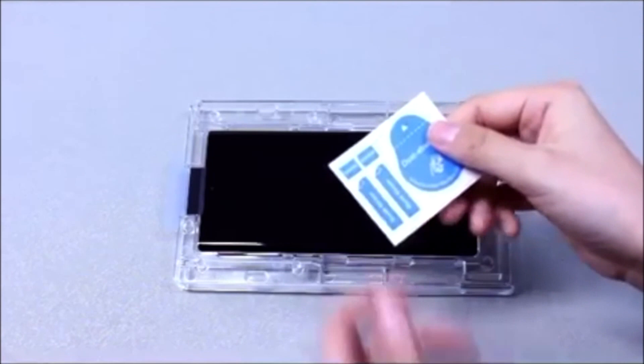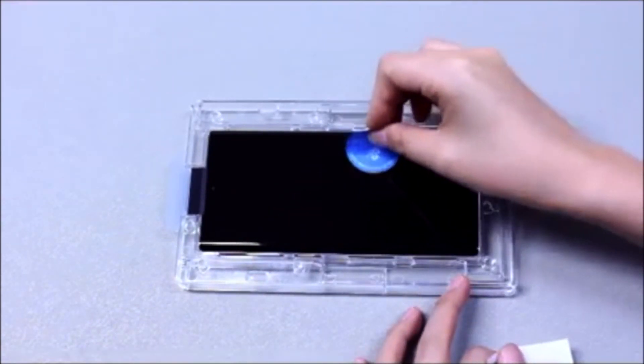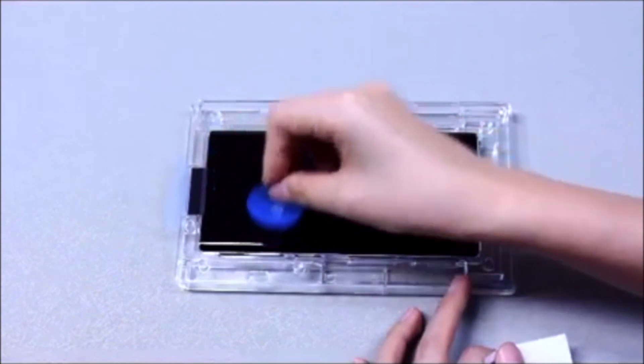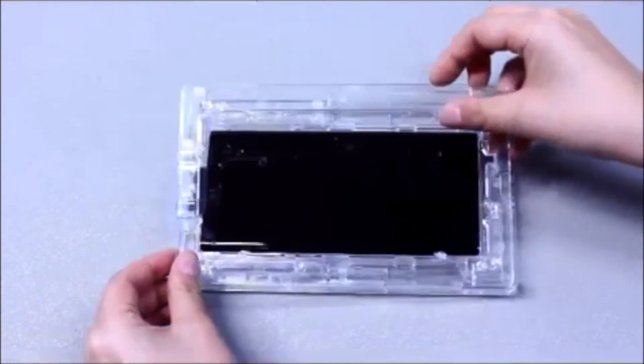Here are the dust removal stickers. You have one large one and two smaller strips. Use the larger one to remove any dust. Now, place the top tray over the foam.